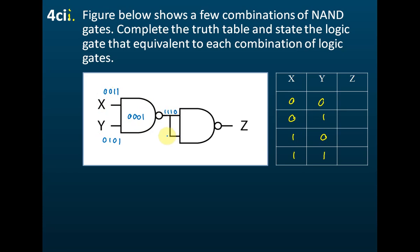So this 1, 1, 1, 0 feeds into the next stage. As mentioned, if a NAND gate has its two inputs joined together, it will act as a NOT gate. Let's prove it.